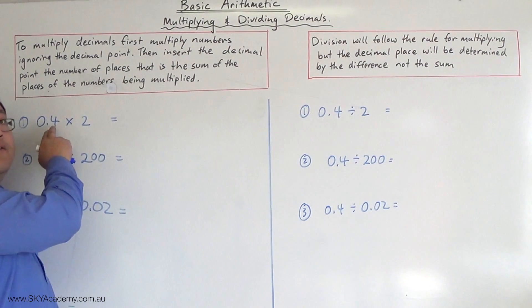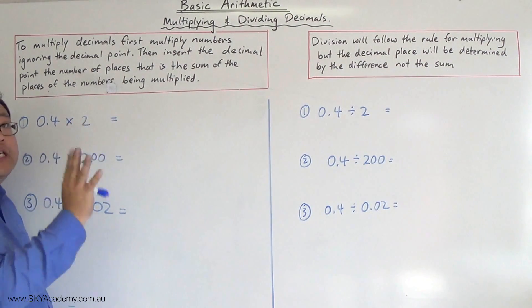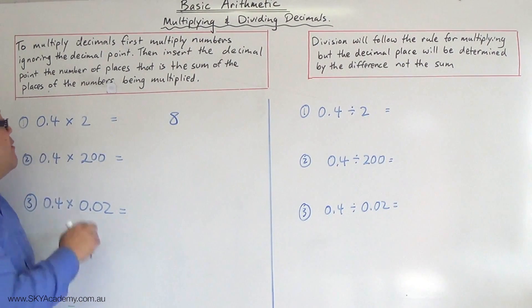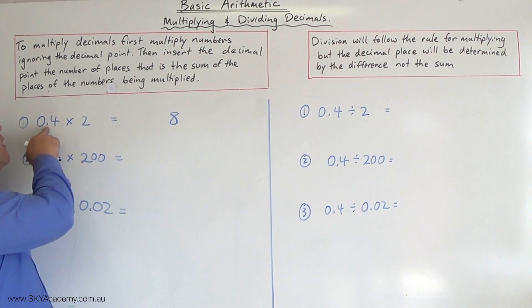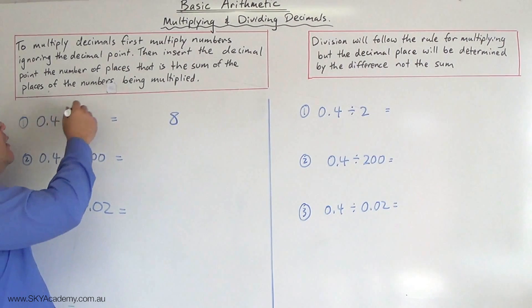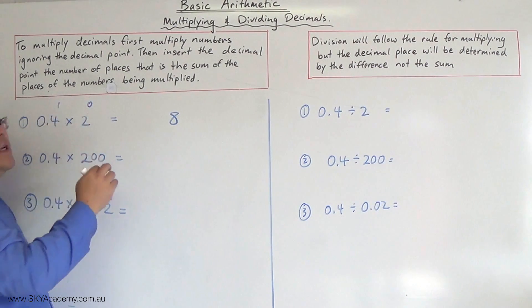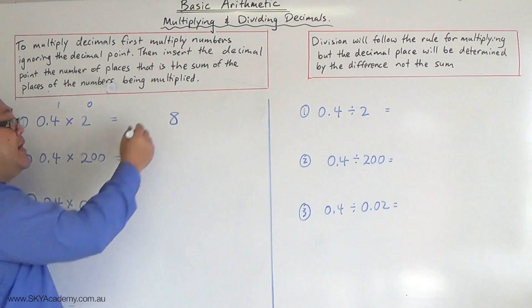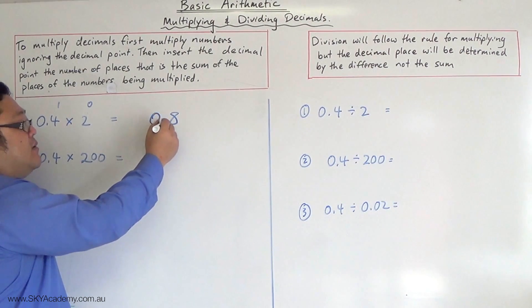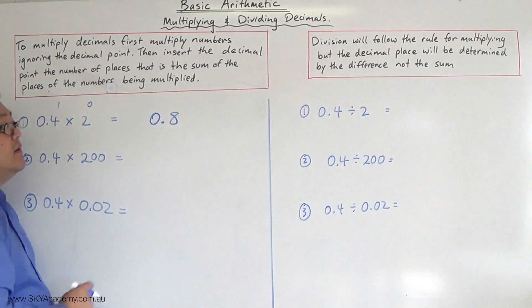Basically, the first thing you do is multiply 4 and 2 as though there are no decimal points, so 4 times 2 is 8. Now you work out how many decimal places there are: one decimal place in the first number, zero decimal places in the second. So you go one decimal place in, and your answer is 0.8.